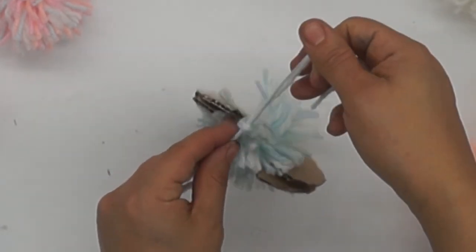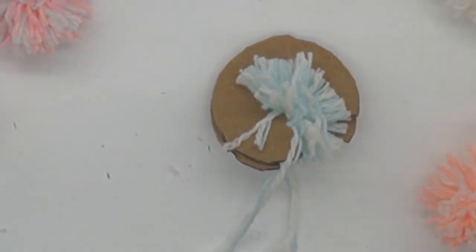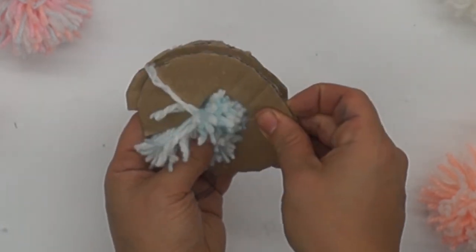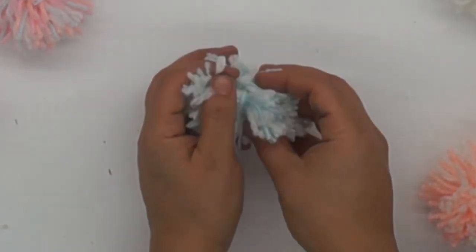Like that. And then you just want to do the last step, which is removing the cardboard. When you remove the cardboard, you might be like, 'Oh, why is it like that? Why is it two bits?'